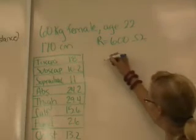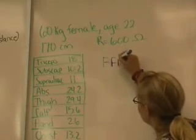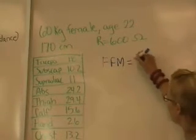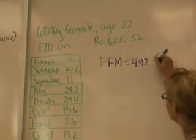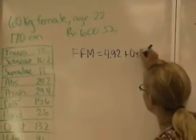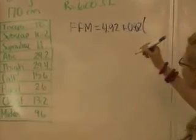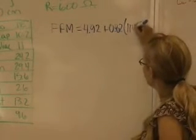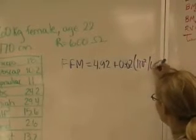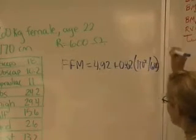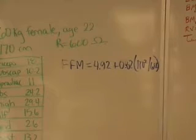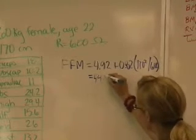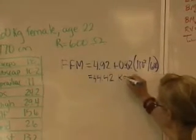So for fat-free mass, using the equation for females, we're going to take 4.92 plus 0.82 times the height in centimeters squared divided by resistance, so 170 squared divided by 600. And that equals 44.42 kilograms.